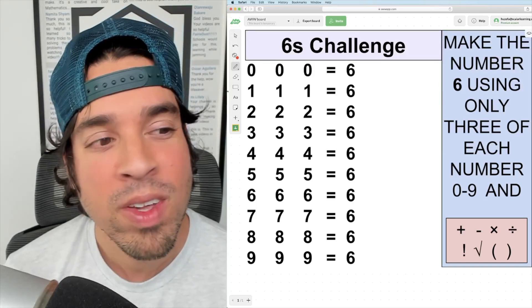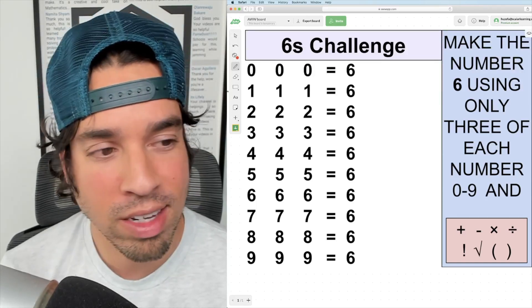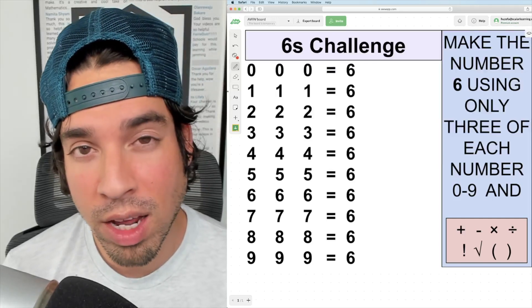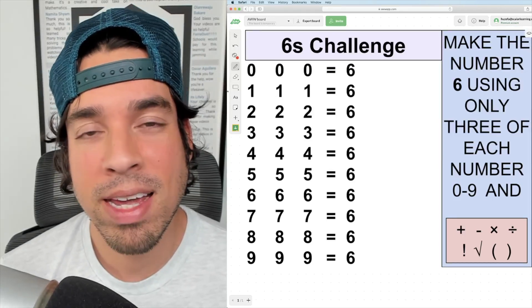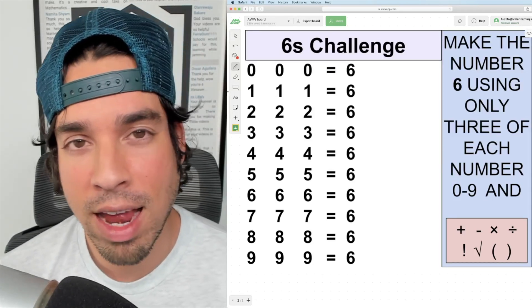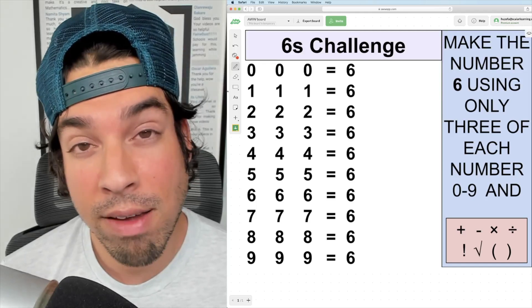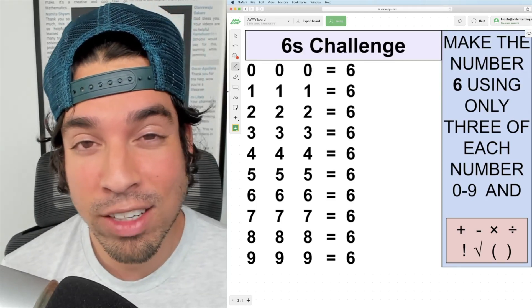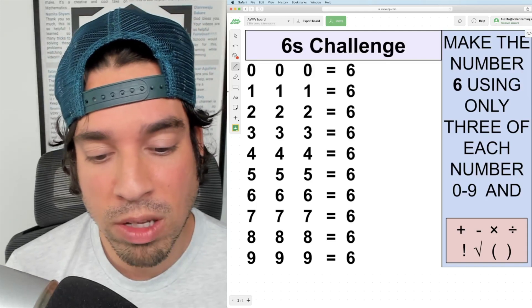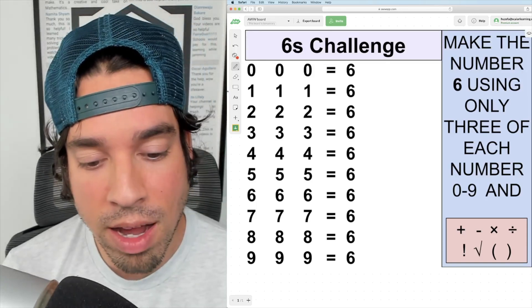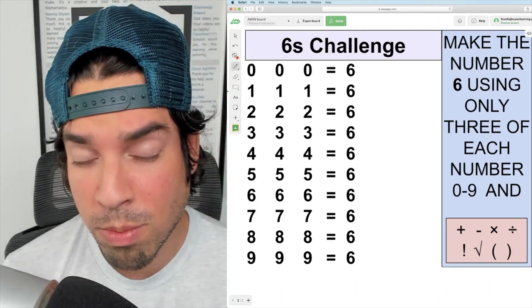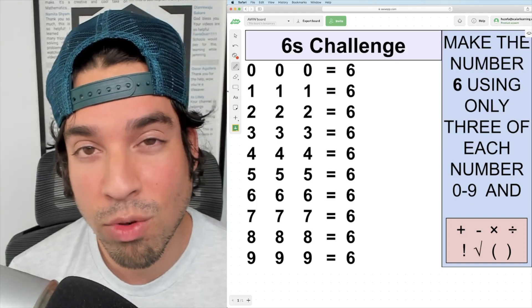Here's what you're supposed to do: using three numbers that are all the same, zero through nine, you're supposed to make six with each triplet. The caveat is you can't add in any extra numbers and you can only use these symbols: plus, minus, times, divide, factorial (that's the exclamation mark), square roots, and of course, parentheses.